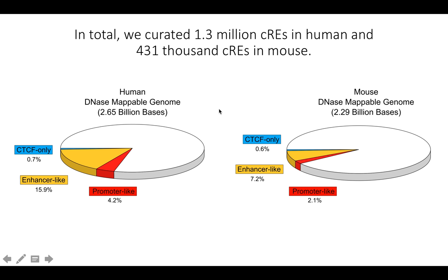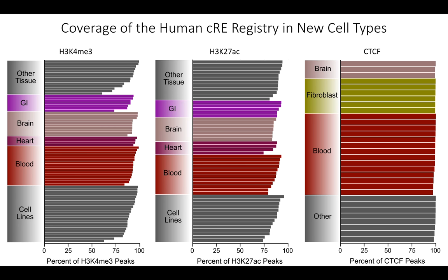In humans we have 1.3 million CREs, and in mouse we have just over 400,000 CREs, with a breakdown of their cell-type agnostic classifications. Even though we don't have every cell and tissue type assayed in the registry, we do have fairly high coverage overall. We took cell types without DNase data to see what overlap their histone mark peaks have in the registry — by combining multiple cell types together, we're able to capture most of the DNase hypersensitivity sites.